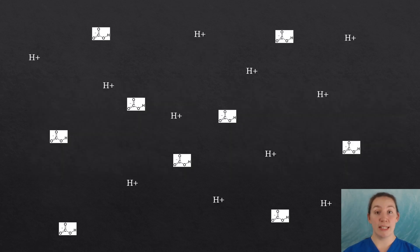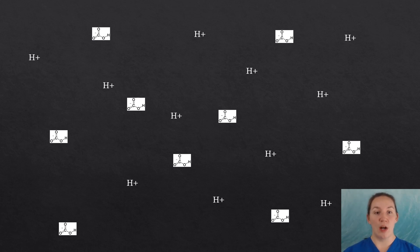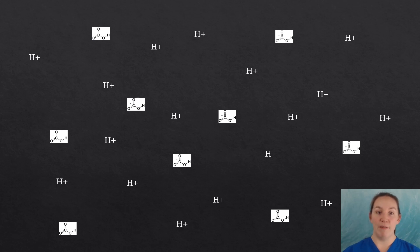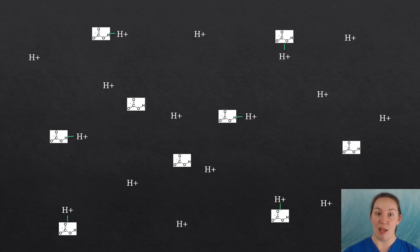Here is an example. Imagine that this solution is at 7.0. Hydrogen ions are produced from many metabolic processes and are released into the solution. Available buffers bind to them to keep the pH stable.